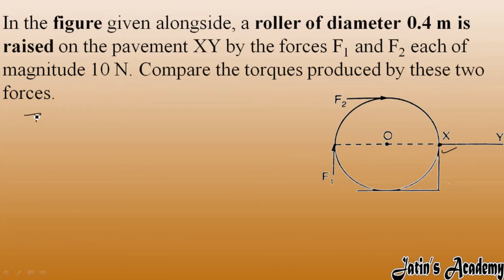Now we have to compare the torque. Torque means T1 by T2, that is F1 into d1 over F2 into d2. The force is simple: F1 is 10, F2 is 10, because each force magnitude is 10 newton. But we have to find the distance, the perpendicular distance from the pivot point.